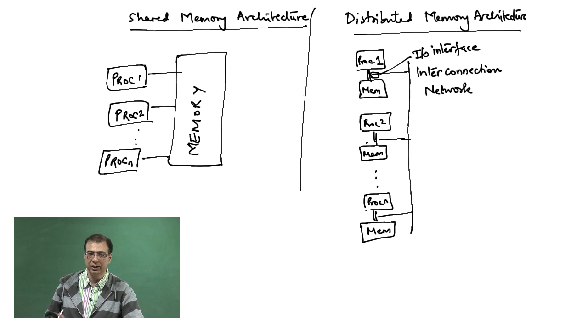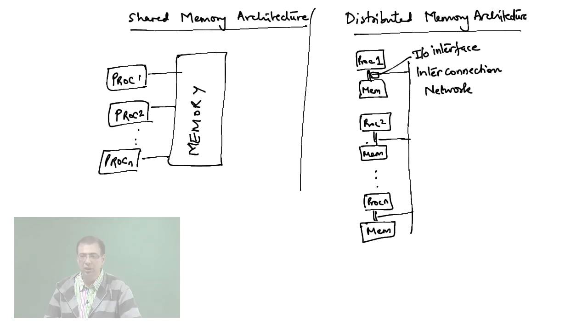Similarly, the interconnection network is connected to the I/O interface. If you want to basically communicate with another processor, you have to go via the interconnection network which is behaving like an I/O device.